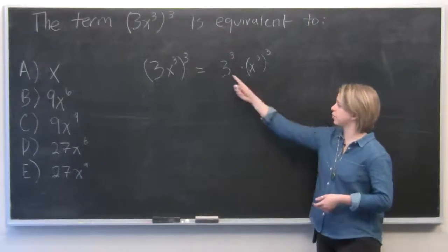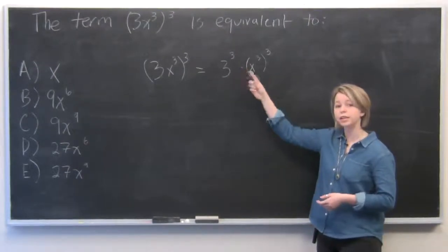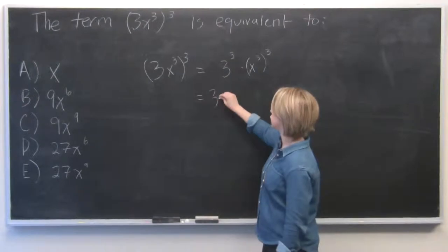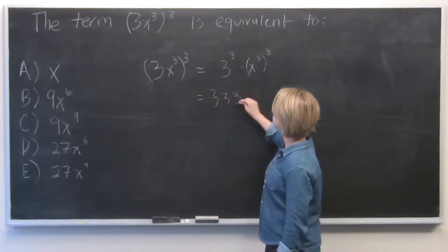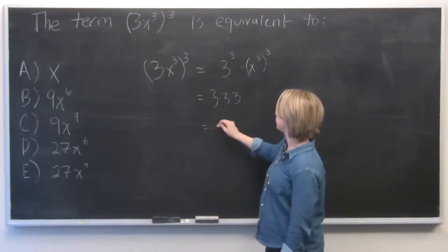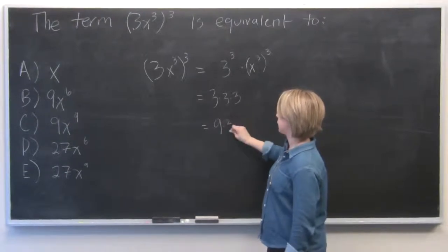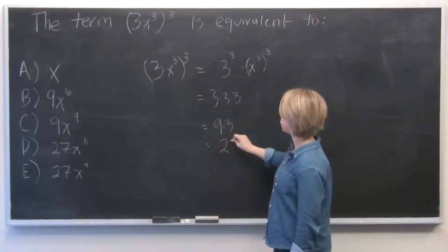And so from here we can work out 3³ simply. That's just 3 times 3 times 3 which is going to equal 9 times 3, or 27.